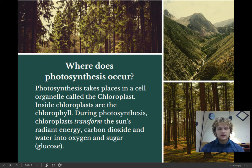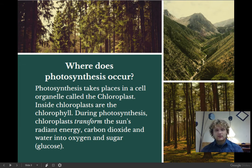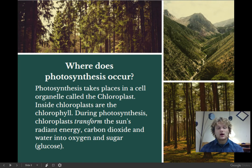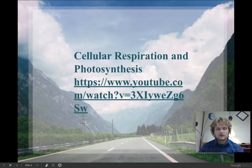These are the words and concepts we need to understand because you're going to have to write this equation out and be familiar with it. Plants take radiant energy, carbon dioxide, and water, and they turn it into oxygen and glucose — two things that we need to survive as humans.